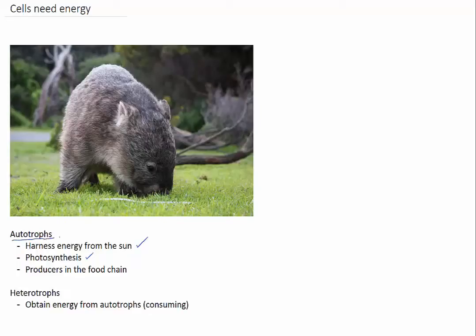They are the producers in a food chain such as plants on land or algae in the water. Other organisms like us or this adorable wombat rely on autotrophs to provide their energy for them, usually by consuming them like this wombat is eating the grass.